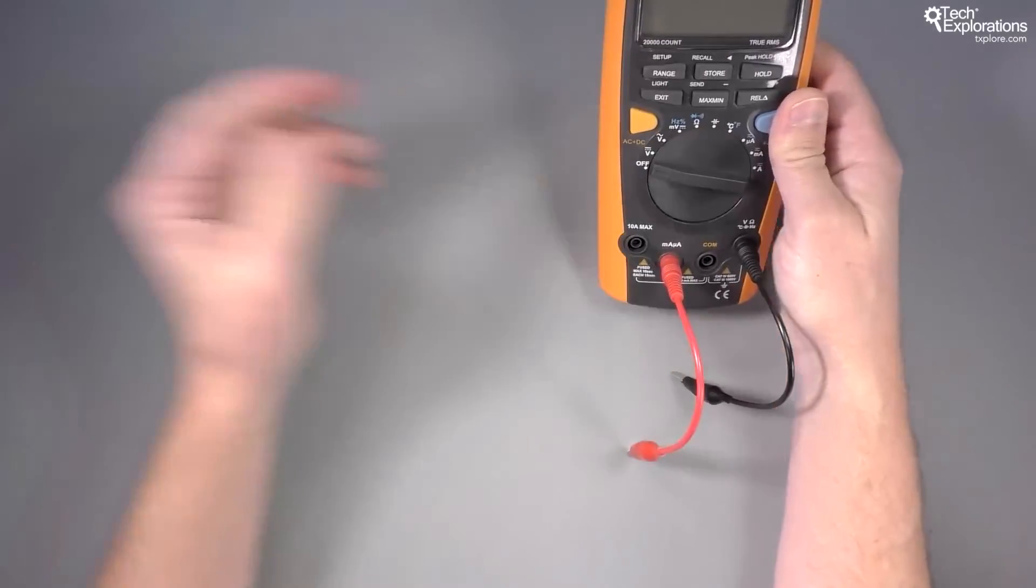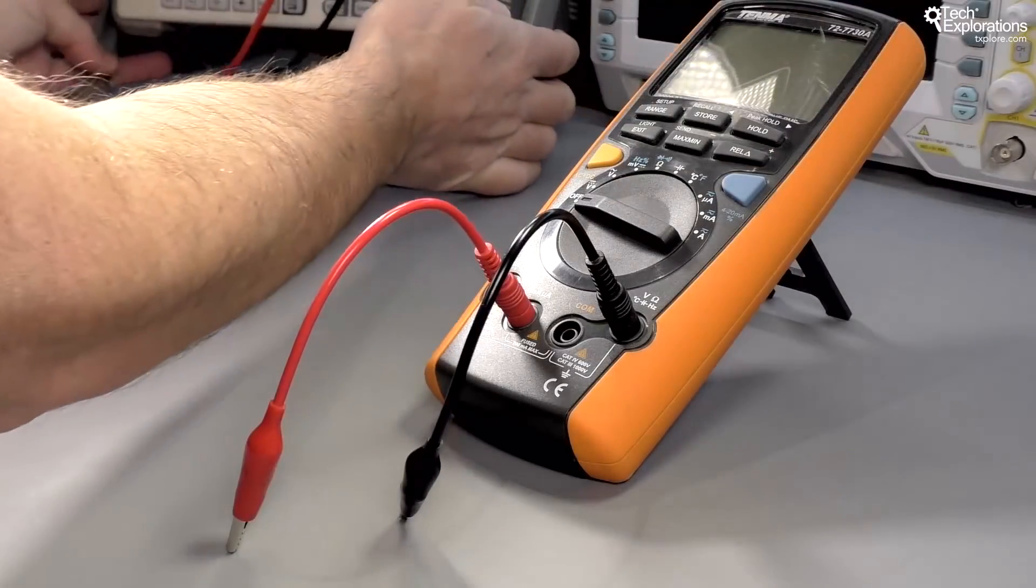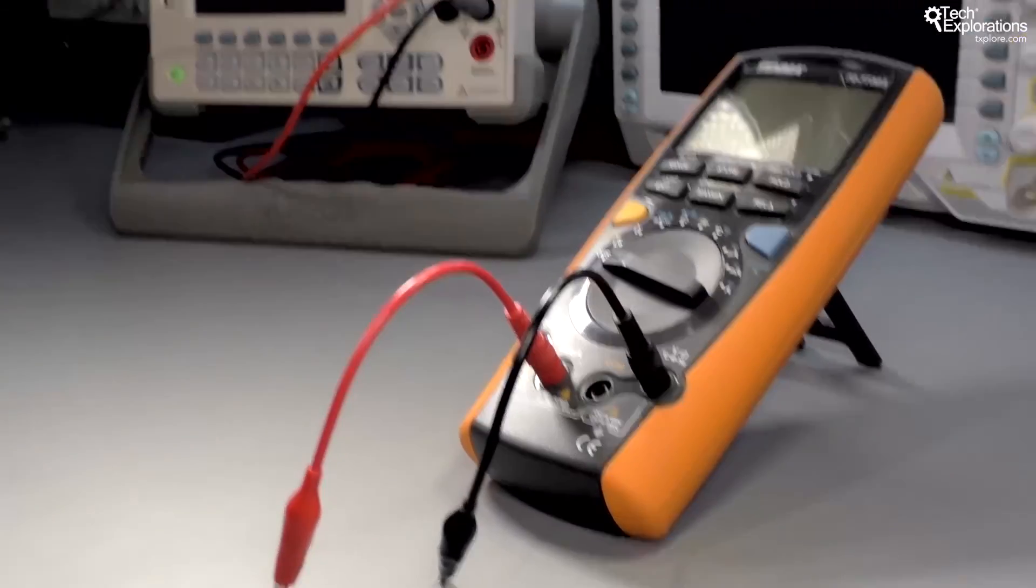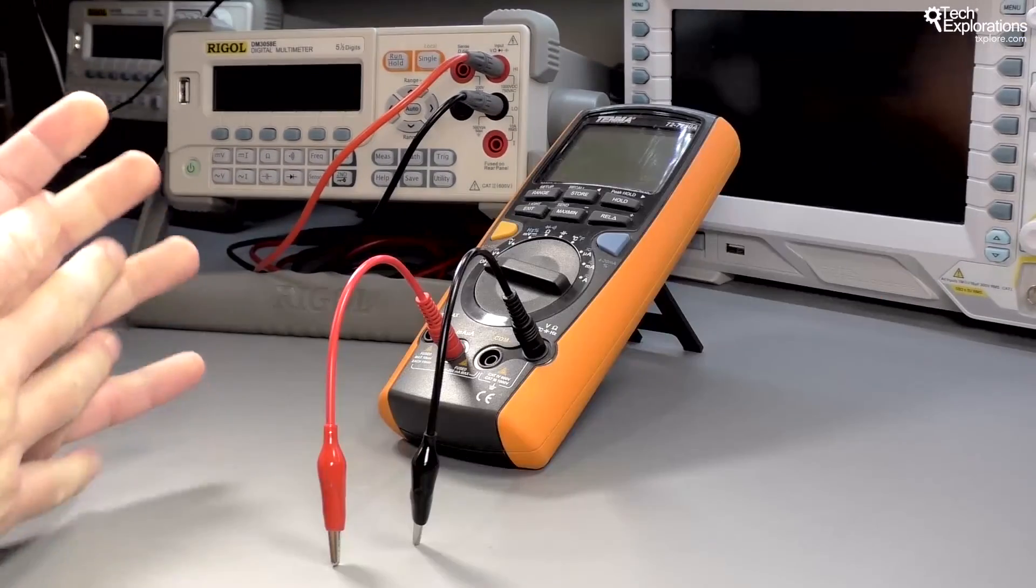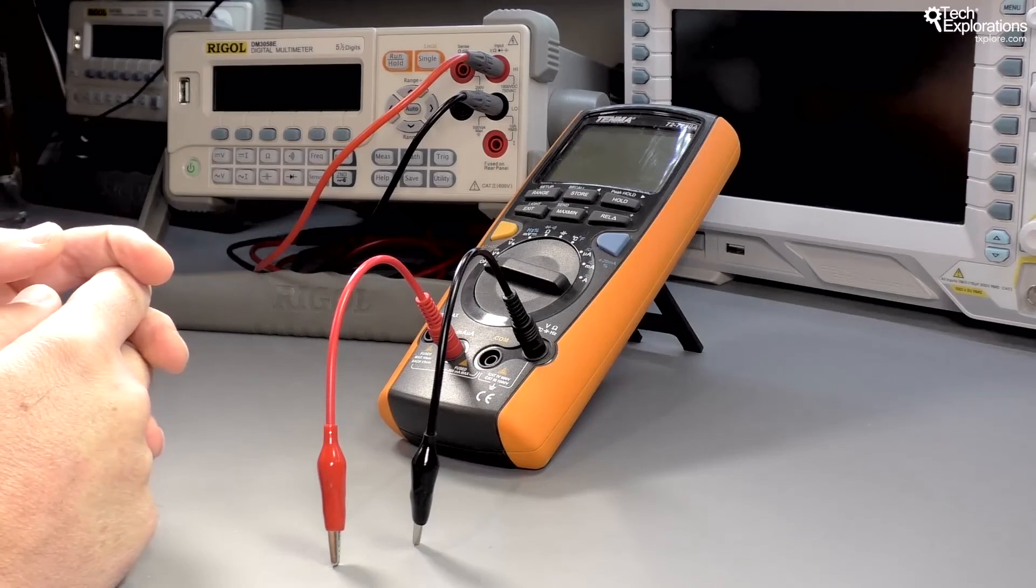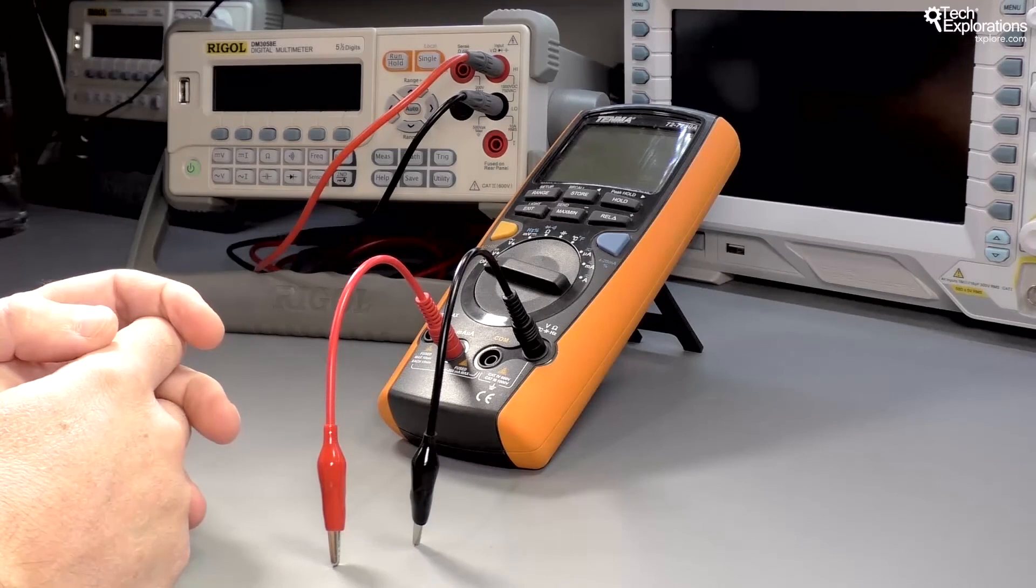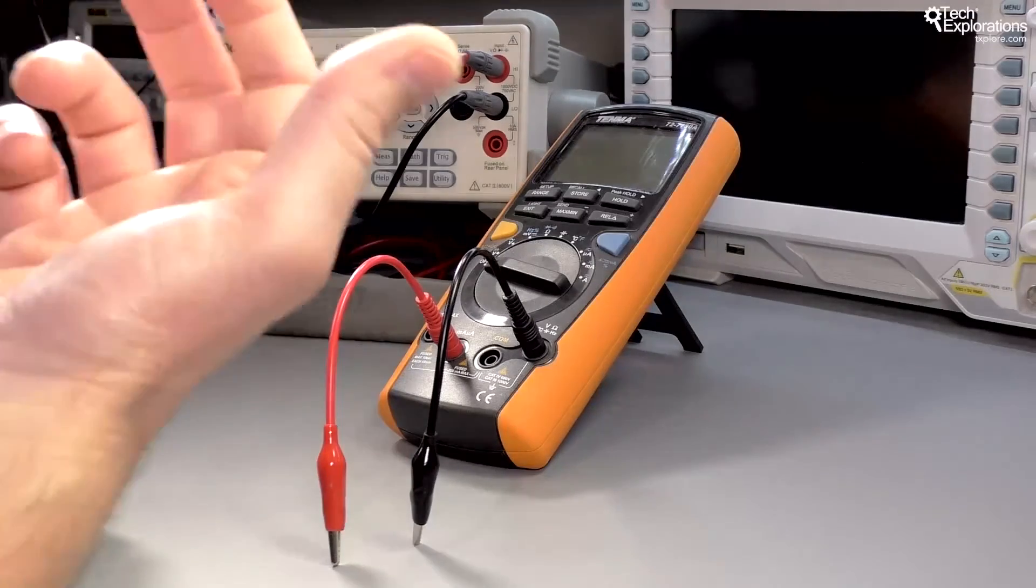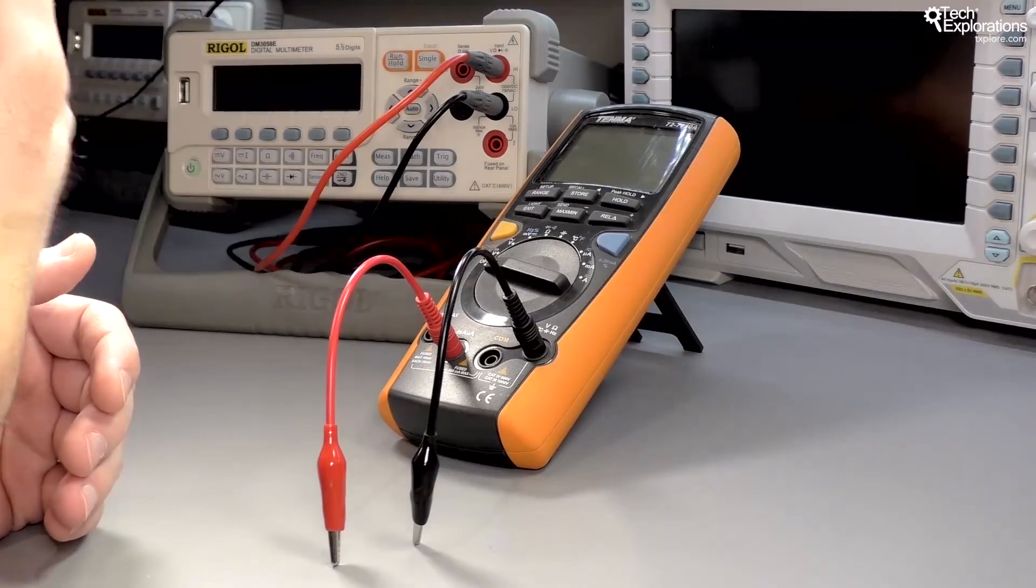I'm also going to be using this one here, my benchtop multimeter. I'll give you a better view of this. I'll be using these two instruments to make simultaneous measurements to different parts of the circuit, either voltage at the same time or voltage plus amperage. And that's all the tools that you need to have available for this course. Let's move on to the next lecture now. We'll talk about the parts.